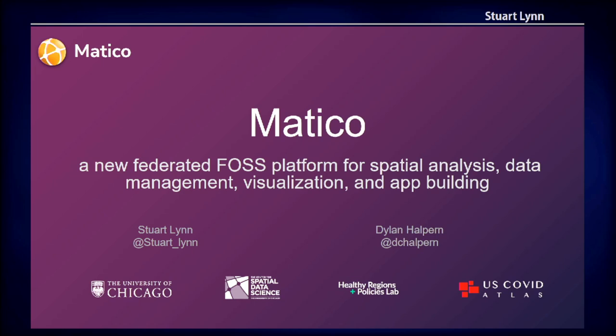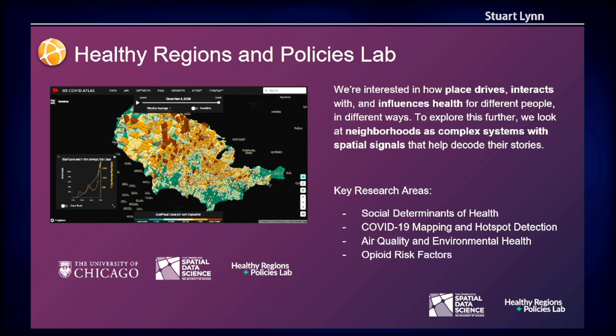I'm here today talking about work I did with Dylan Harpen at the University of Chicago. I work at the University of Chicago at the Spatial Data Science Center and with the Healthy Regions and Policy Lab. We are a group interested in how place drives, tracks with, and influences health for different people in different ways. To explore this, we use neighborhoods, complex systems, and social economics of geospatial modeling.